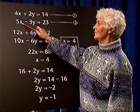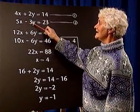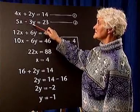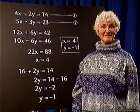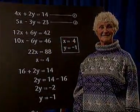5 times 4 is 20. Minus 3 times minus 1 is plus 3. 20 plus 3 is 23, so our answers are correct.